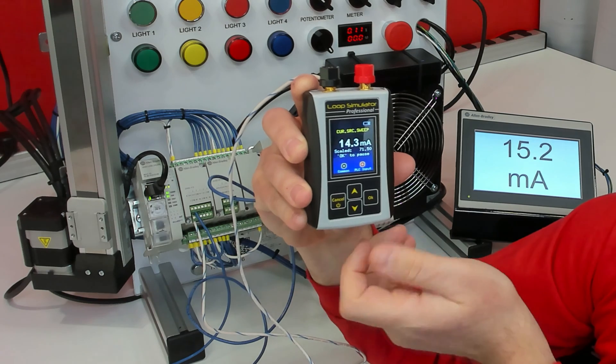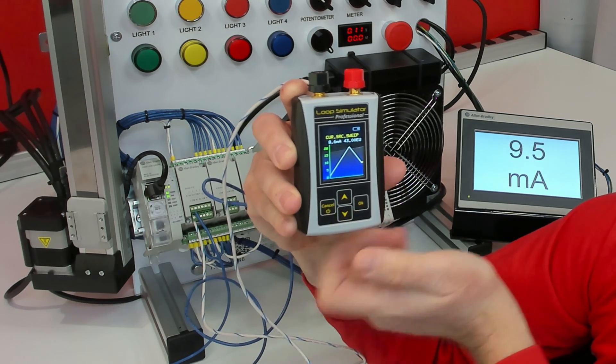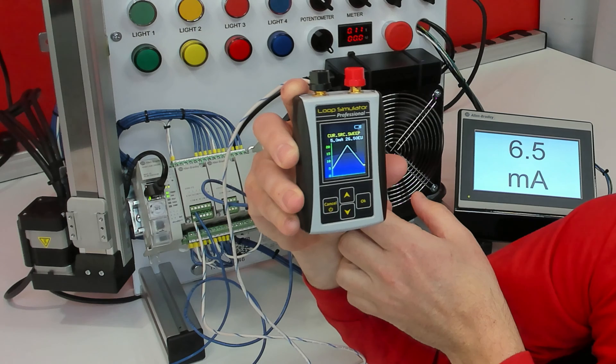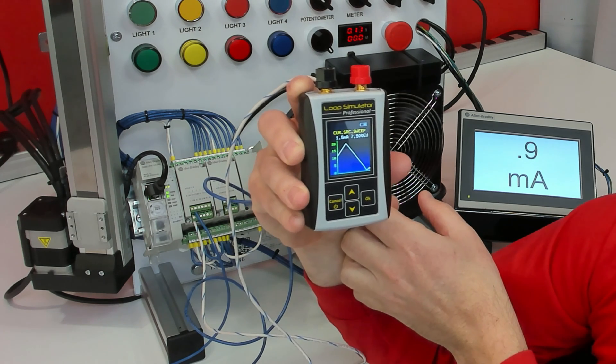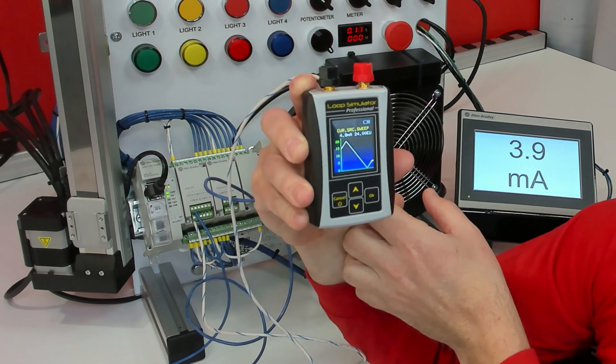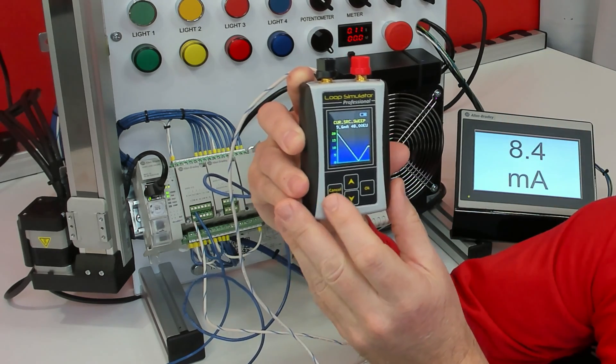And let's say we had to walk away and check something. We can hit the down arrow. We can actually get a graph that's going to tell us what it was doing. That way we can go check something, and if we see an issue, walk back over and be like, ah, that must have happened at 12 milliamps.